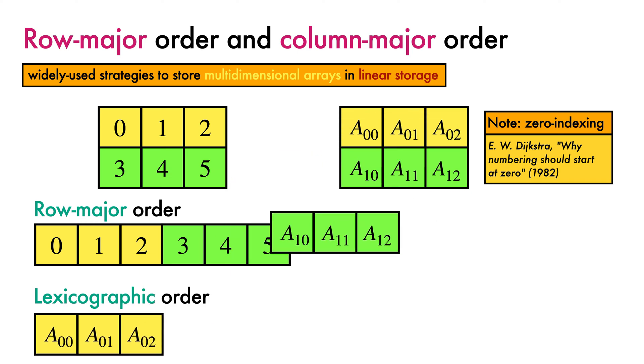When we flatten the matrix in Row Major Order, we can see that the subscripts follow lexicographic order, similarly to how words are arranged in a dictionary. This means, for instance, that a10 comes later in the array than a01, because the first subscript position carries more weight than the second.